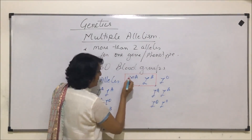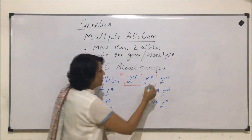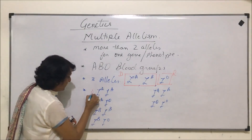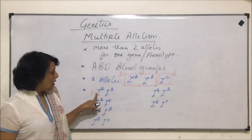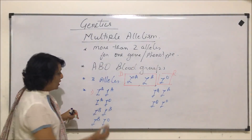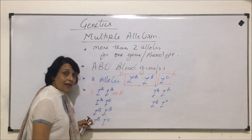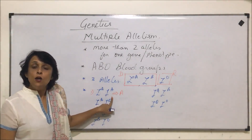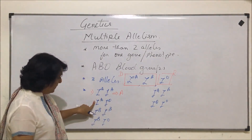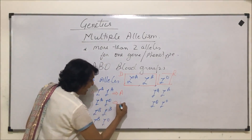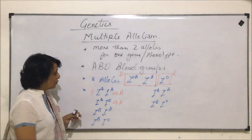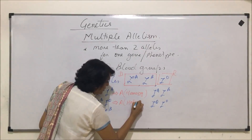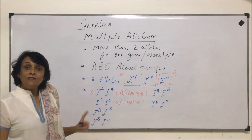Out of these three alleles, IA and IB are dominant and only IO is the recessive allele. In the first case, we are talking about a homozygous dominant condition, so the blood group of this person will be A — we call this homozygous A because both alleles are for the dominant one. The second individual will also have blood group A but it is heterozygous.